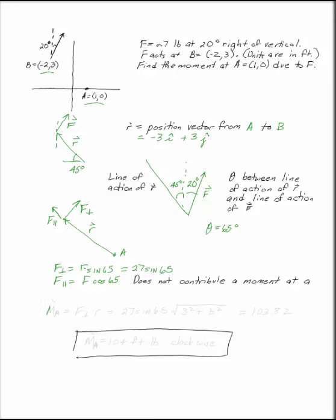So, the moment at A is going to be equal to F perp times R, which in this case is 27 sine 65, times the magnitude of R, which is 3 squared plus 3 squared, or 103.82.